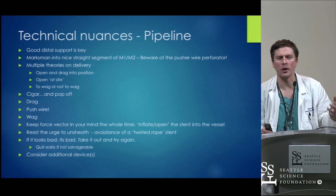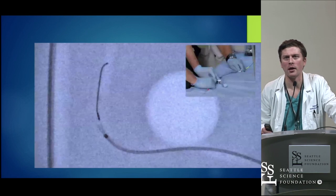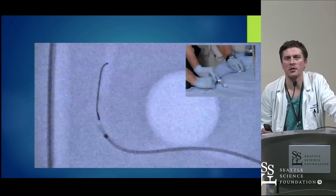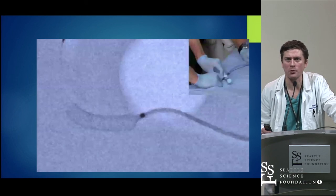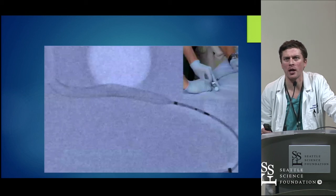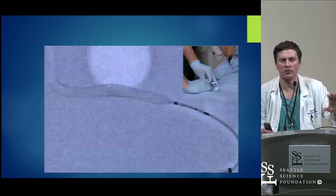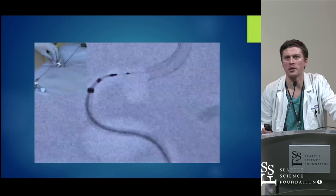This is one of those things that makes more sense when you do it in the lab — it's all feel, similar to coiling. The cigar is less of an issue with the Pipeline Flex device because it pops off by itself. As we keep pushing the wire out, more Pipeline gets pushed out. What we mean by wagging the catheter is holding the wire and catheter and pushing them forward and back — that inflates the stent into the vessel and fills the space. Then we keep pushing out the stent until it's fully delivered and recapture the wire.